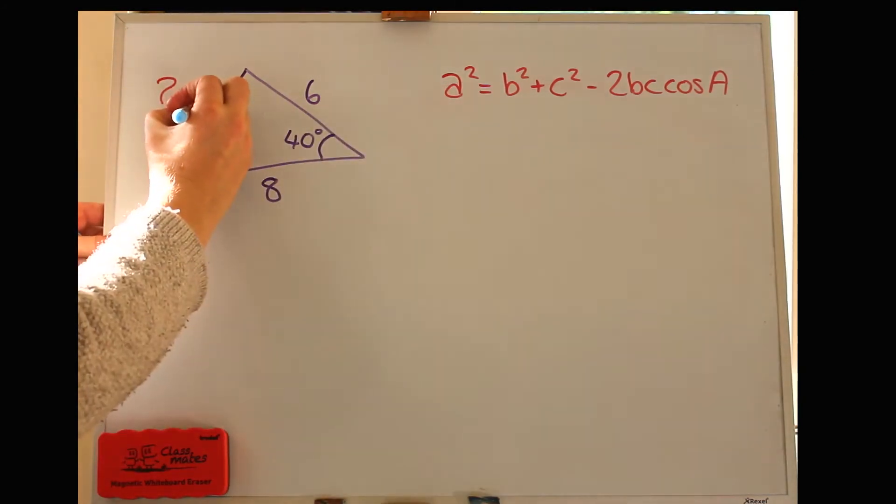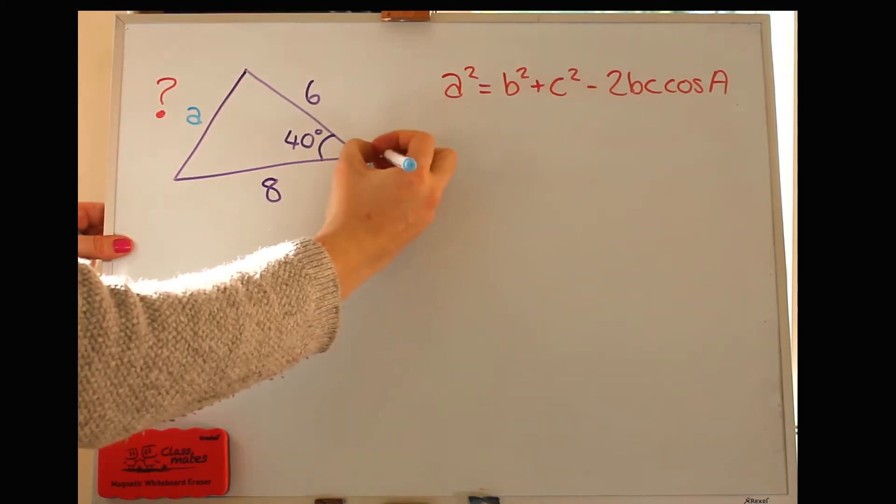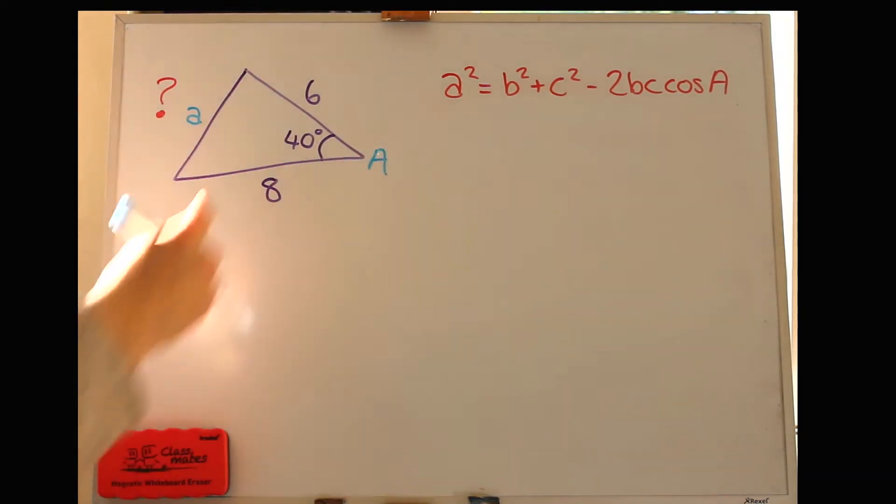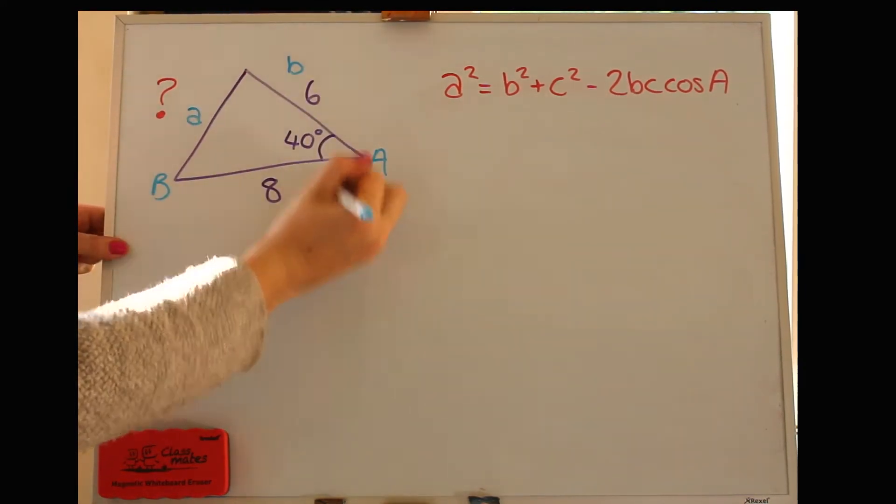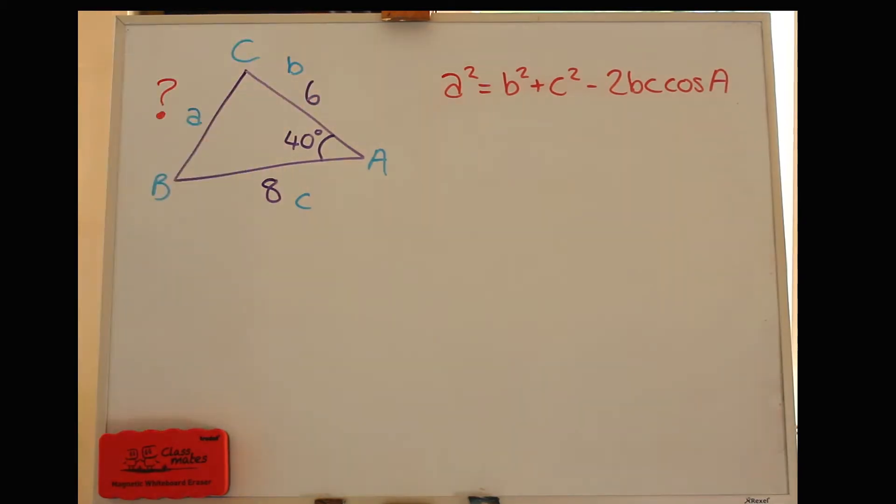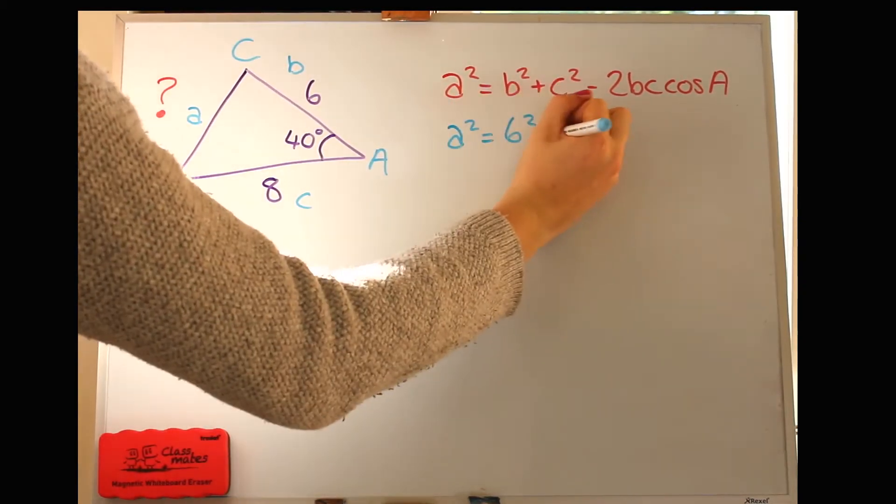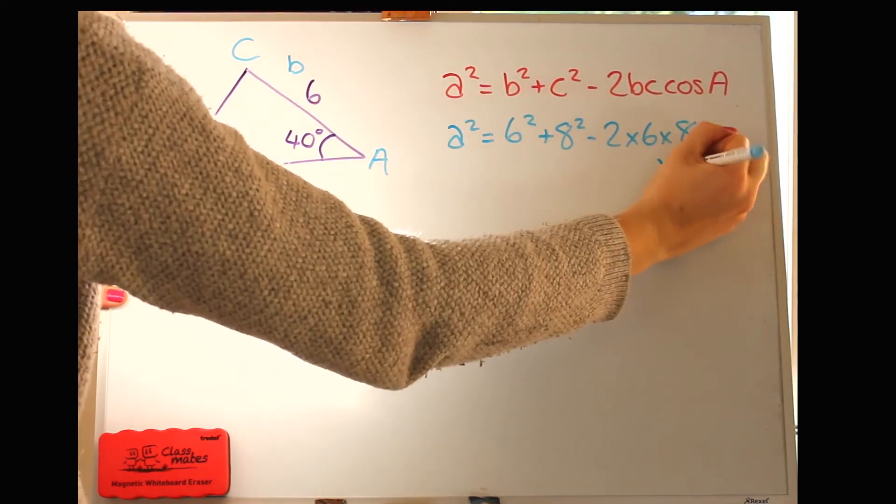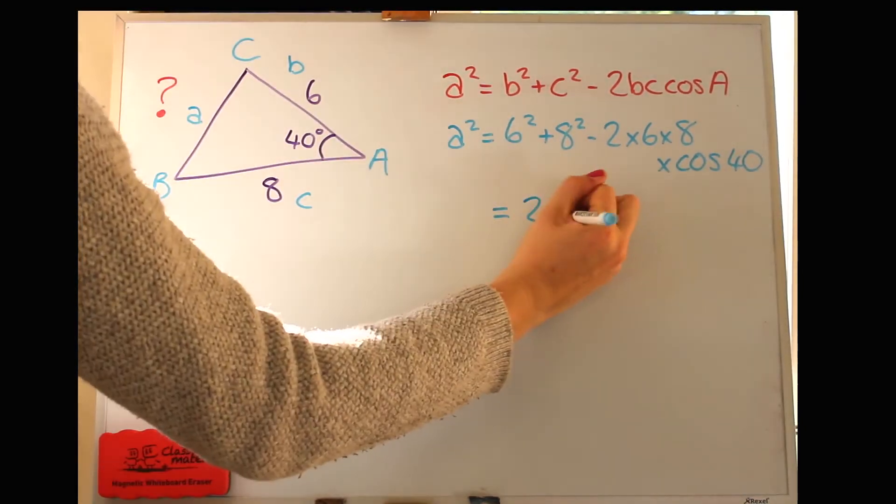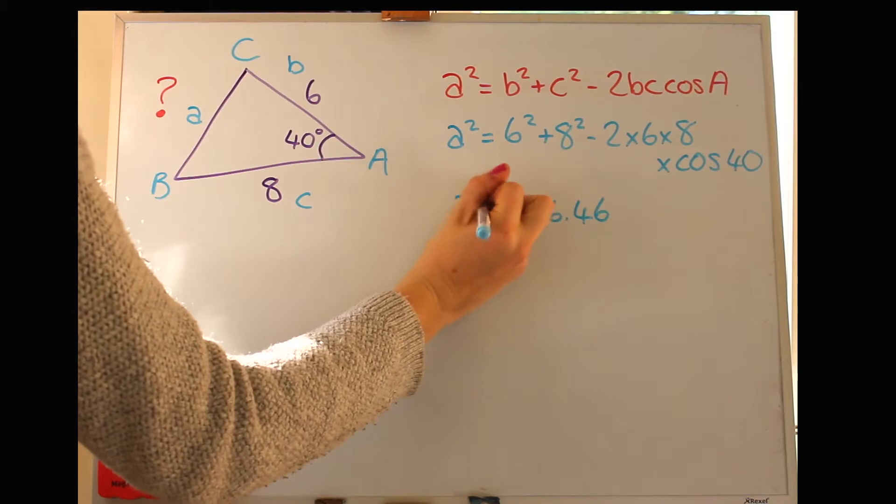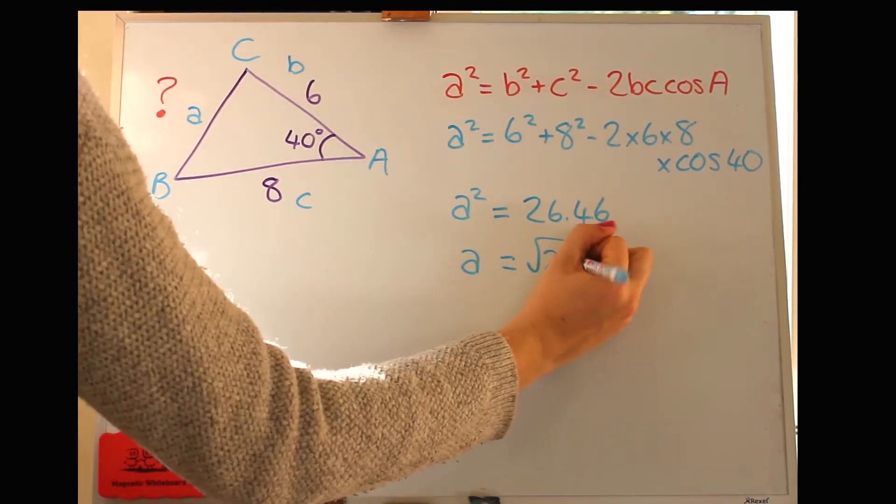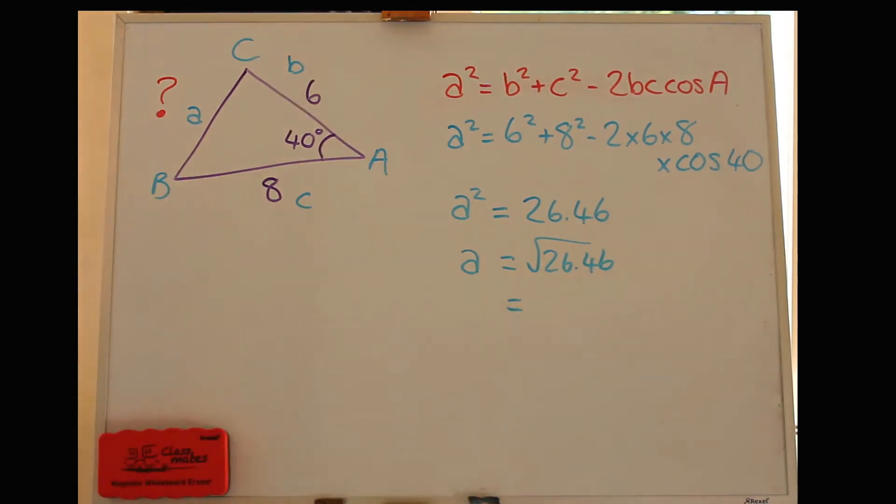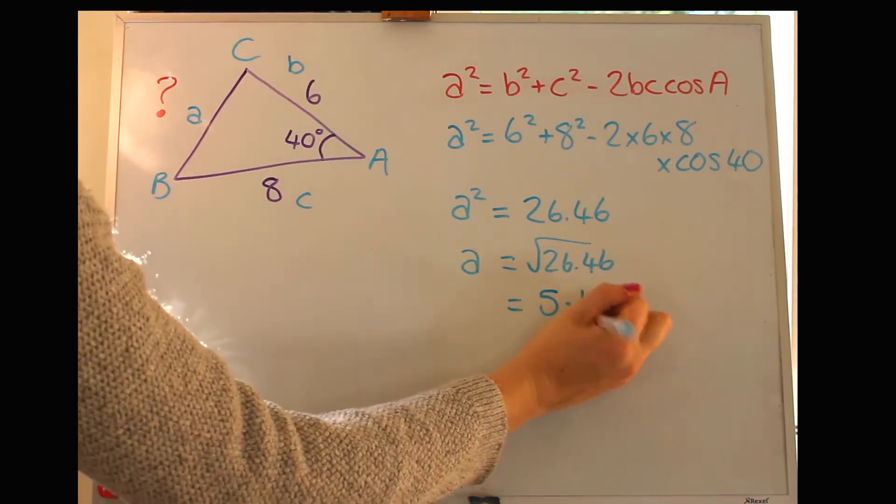So relabeling this, we're going to make this side a, which means that that corner is big A. And then the other two don't really matter which way round we put them. I'll just use that one as b and this one is c. Have a go at putting those values in. Okay, that's a squared that gives us that. So we can then square root that to find a. And I make that to be 5.1.